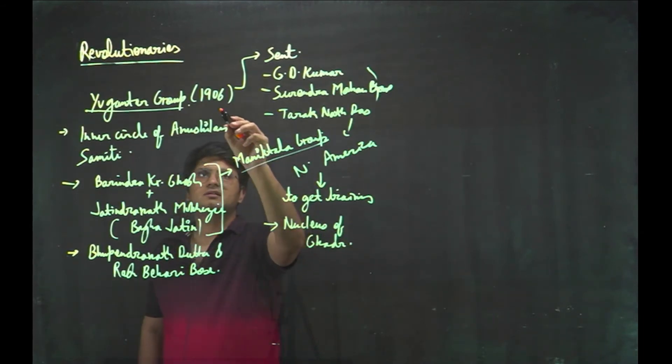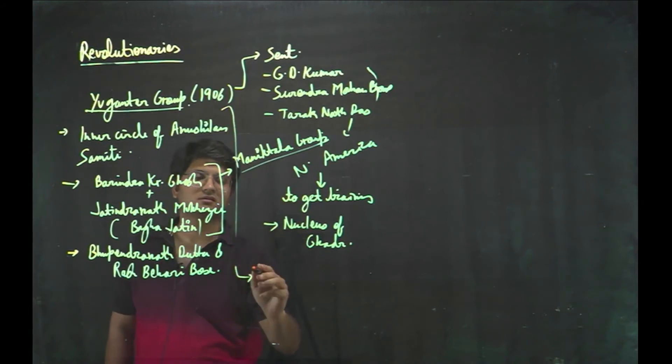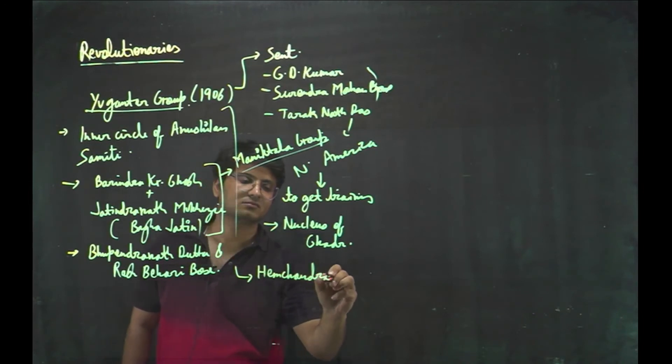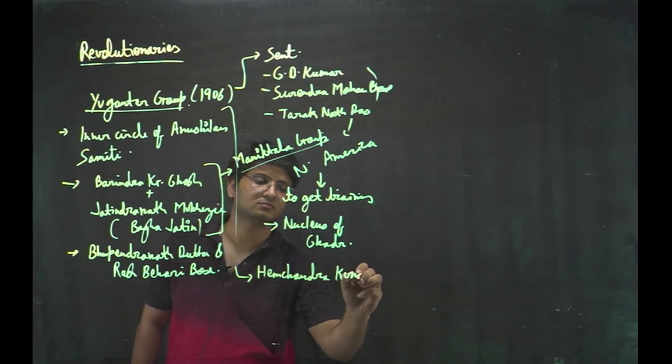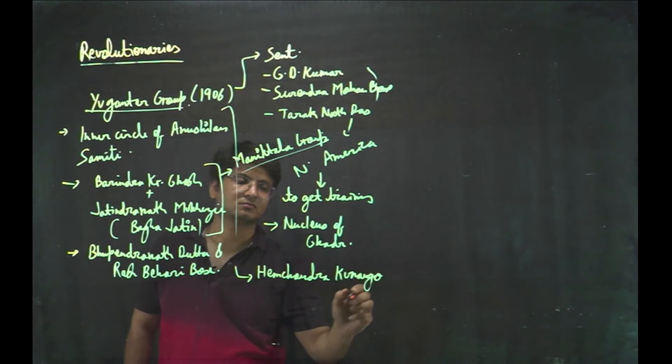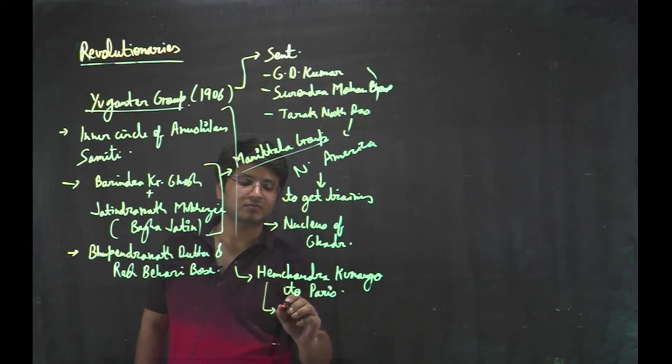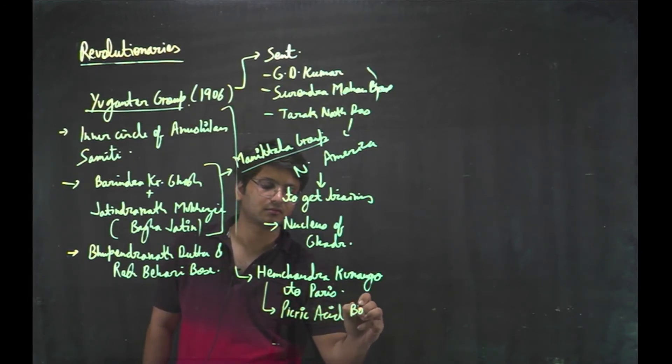And this Yuga Antar group also sent Hem Chandra Kanungo to Paris. He learned to make picric acid bombs from Russian revolutionaries. And when he came to India, he joined Maniktala group.